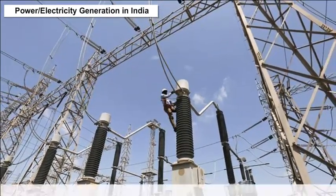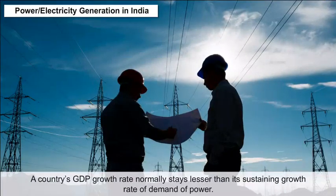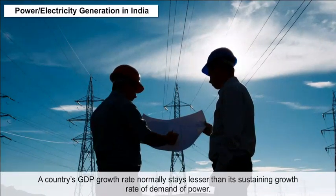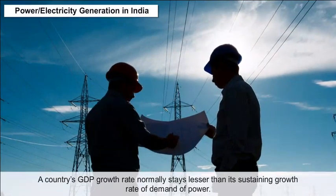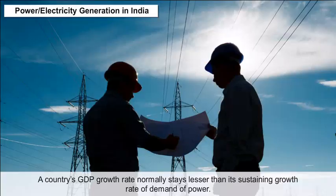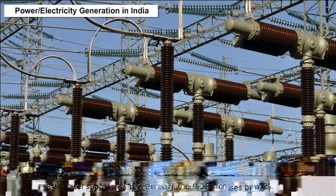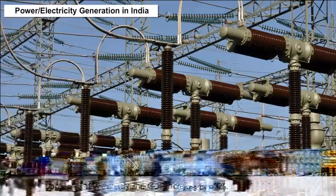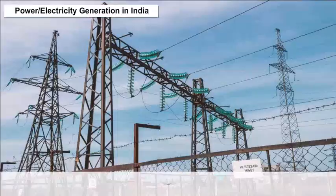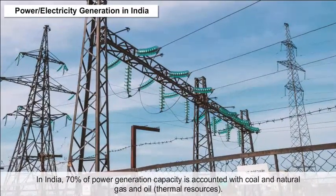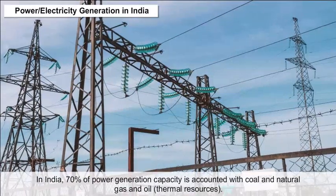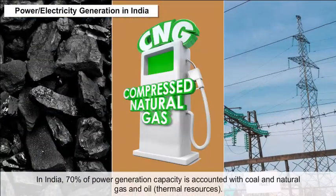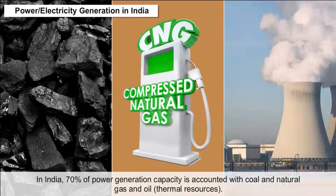Power and Electric Generation in India. A country's GDP growth rate normally stays lesser than its sustaining growth rate of demand for power. When power supply grows 12% annually, the GDP increases by 8%. In India, 70% of power generation capacity is accounted for by coal and natural gas and oil thermal resources.